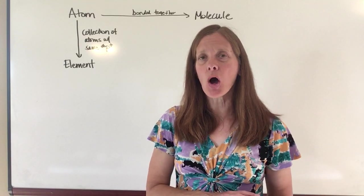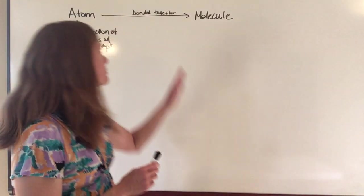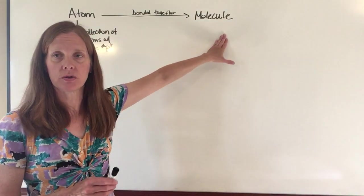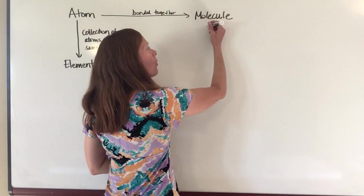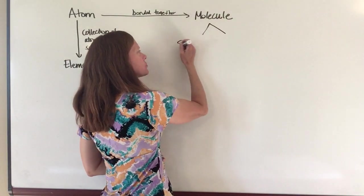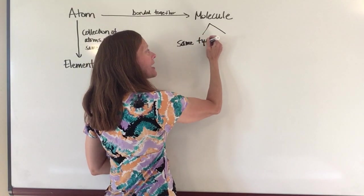But we can also take those atoms and we can bond them together. And when we bond atoms together, we form molecules. Now there are two different types of molecules. One type of molecule is one where you have all of the same type of atoms.